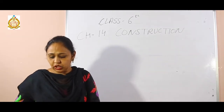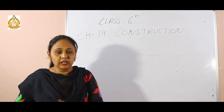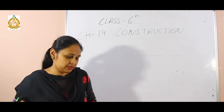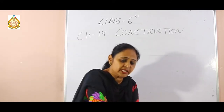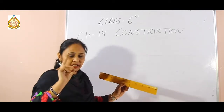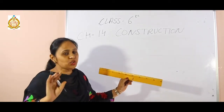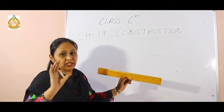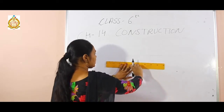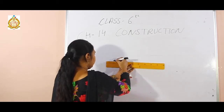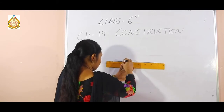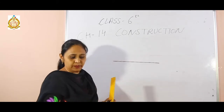Construct the following angles using ruler and compass. The first angle I am going to draw is 45 degrees. First, I will draw a single line. If this concept is clear to you, then you can construct any angle. I am going to take any line — a straight line.